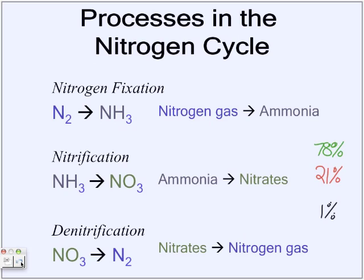Here are the main processes of the nitrogen cycle. First is nitrogen fixation, where we start with nitrogen gas in the atmosphere and it is converted into ammonia by nitrogen-fixing bacteria. Then in nitrification, ammonia is converted into nitrates, and nitrates are one of the most used sources of nitrogen by plants.